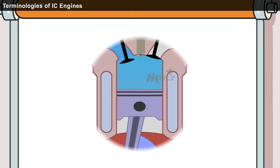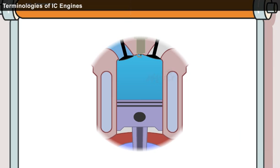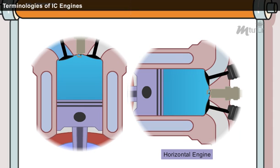The lowest position of the piston towards the crank end of the cylinder is called bottom dead center, or BDC. In horizontal engines, this is known as outer dead center.